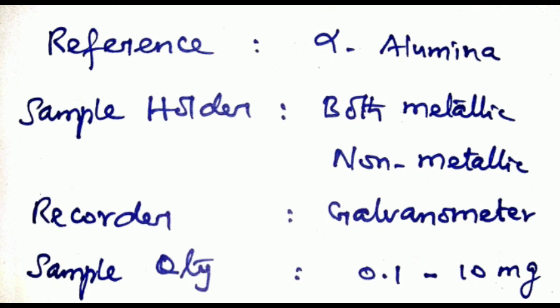The recorder in DTA apparatus is a galvanometer. The sample quantity is 0.1 to 10 milligrams.